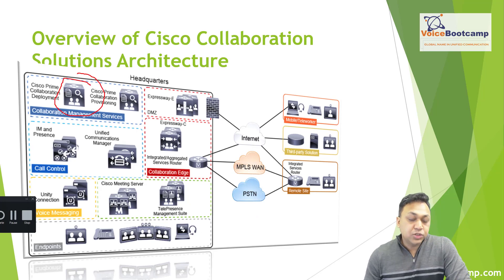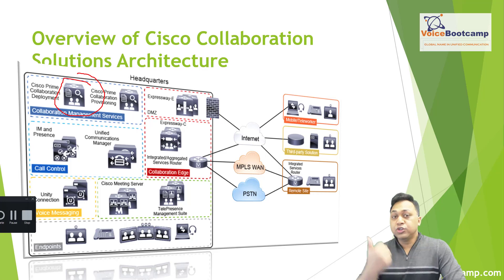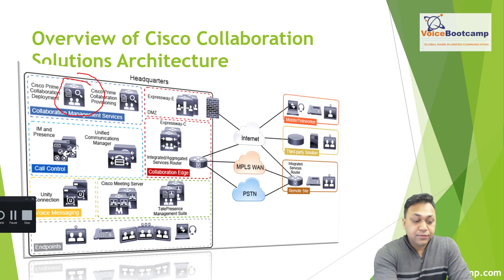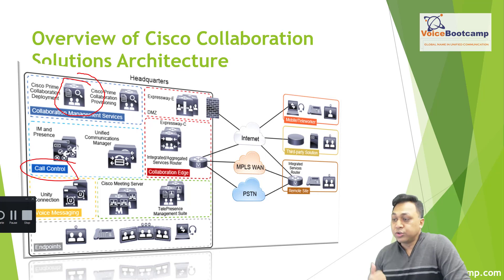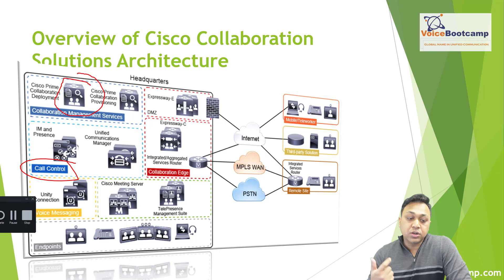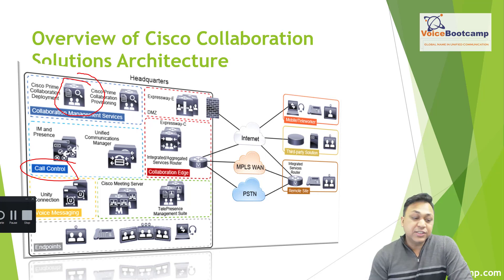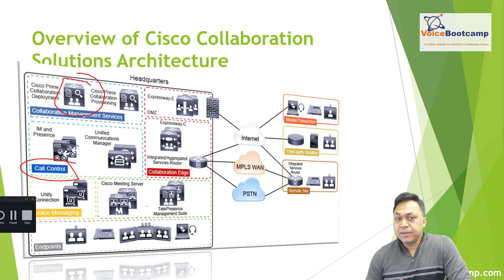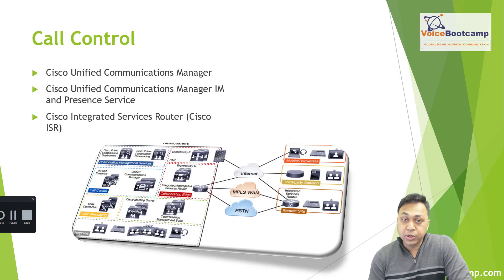You have management devices that allow you to automate the installation and provisioning of end users. You have call control, which includes Call Manager or Cisco Unified Communication Manager, to register the phone. You have instant messaging, which is for chat and Jabber client. So there are various applications and components within your infrastructure that you have to be familiar with.